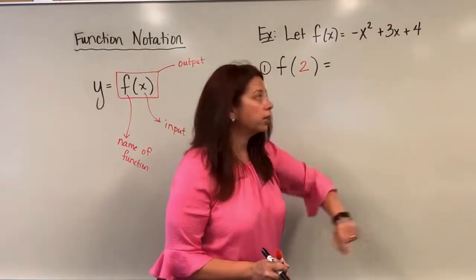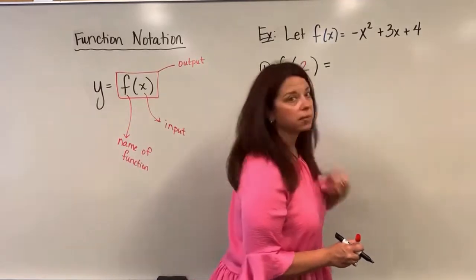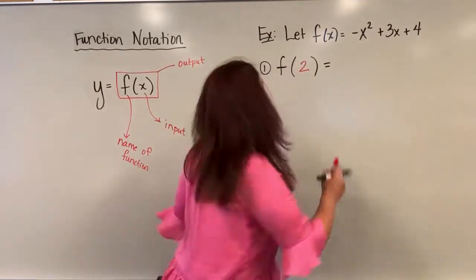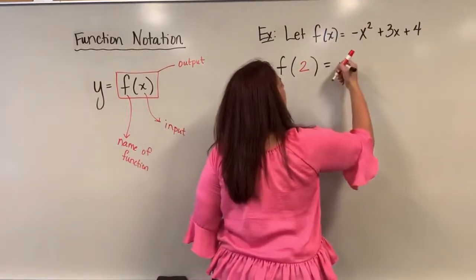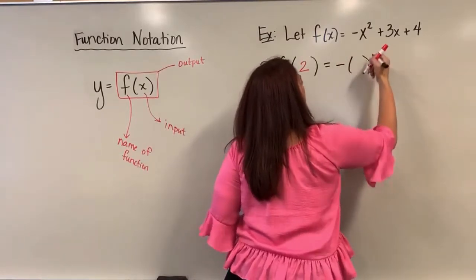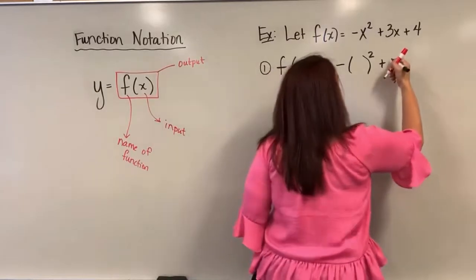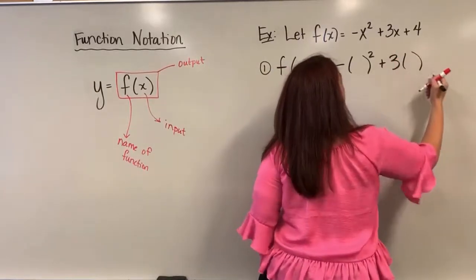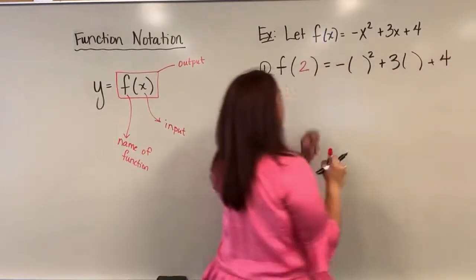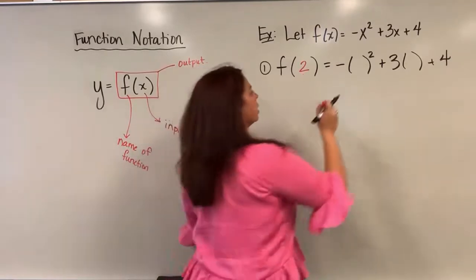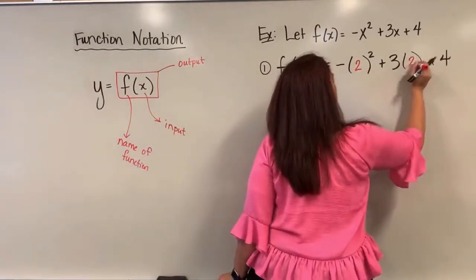After many years of teaching, I notice many students tend to make a mistake on that second x. I substitute in: I have a negative something squared plus 3 times something plus my 4. And again that something is going to be the input that I started with, a 2 and a 2.